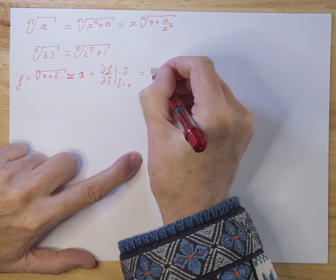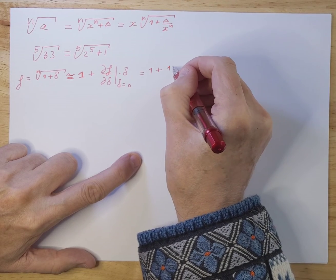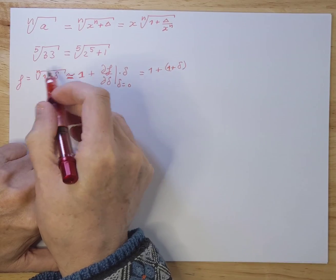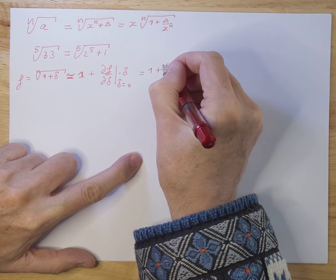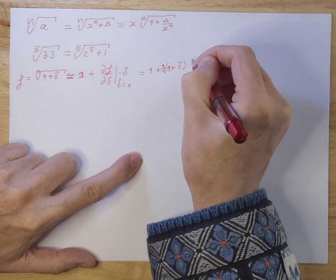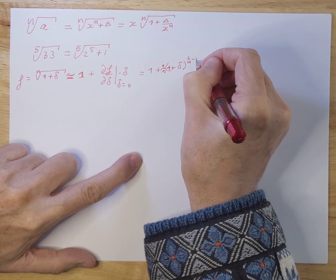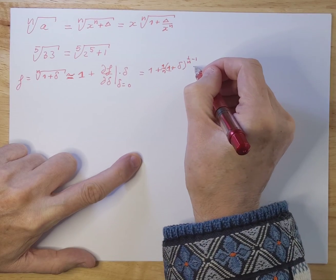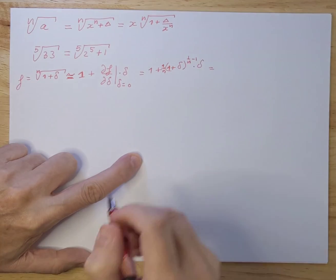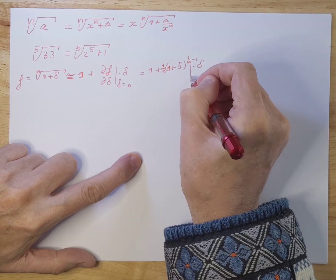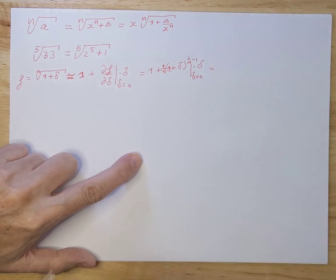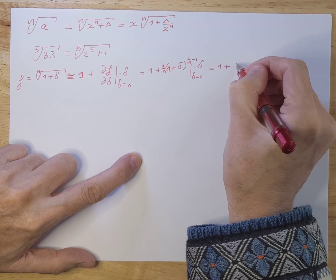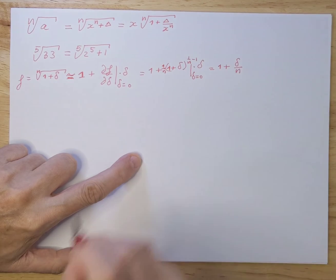So if we work this out we get that plus 1 plus delta and we have to differentiate this. So we get 1 over n and this is 1 over n minus 1, times delta. And if you work that out and you have to evaluate obviously this at delta equals 0. So if you work that out you get 1 plus delta over n.